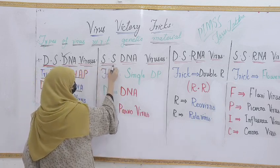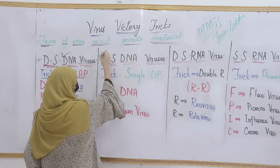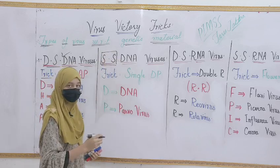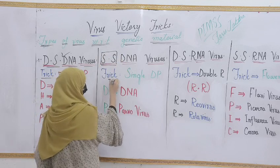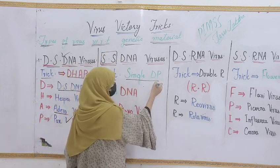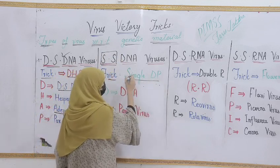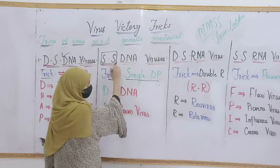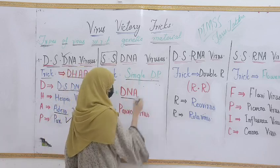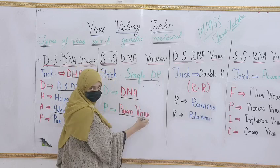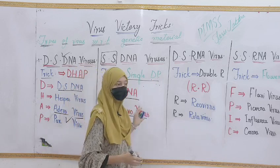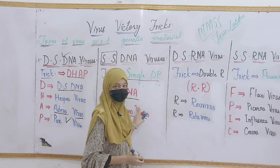The next one is SS DNA virus. SS stands for single-stranded DNA viruses. The trick to understand these viruses is Single-DP: Single is for single-stranded, D stands for DNA, and P for parvovirus. That was also an easy trick to understand this.